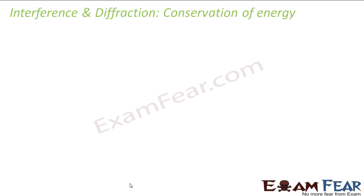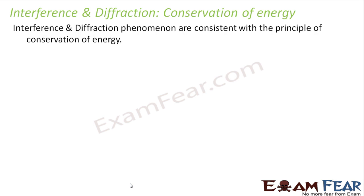Now let us talk about interference and diffraction in terms of conservation of energy. Everything in this universe follows the law of conservation of energy, and these two phenomena are equally consistent with it. What happens is that the light energy gets redistributed — neither lost nor gained, just redistributed. In the fringe pattern, somewhere it is bright meaning more light energy, somewhere it is dark meaning no light energy. The redistribution keeps happening but the total energy remains the same.